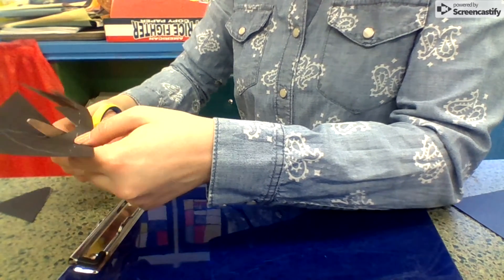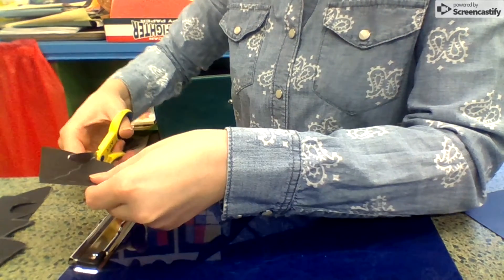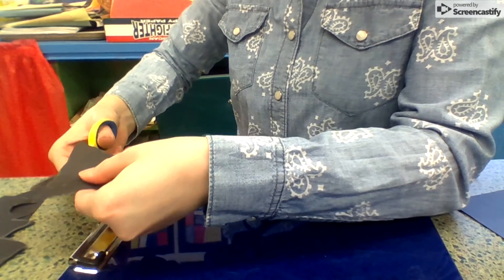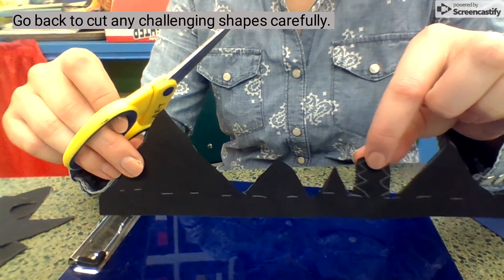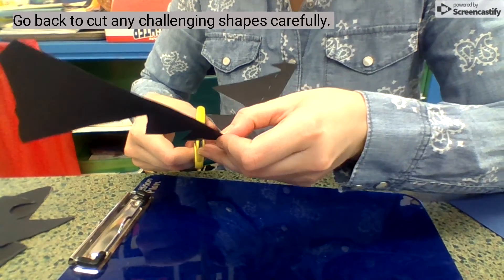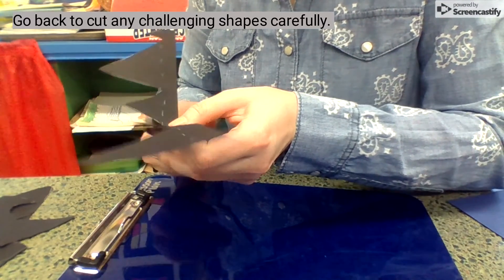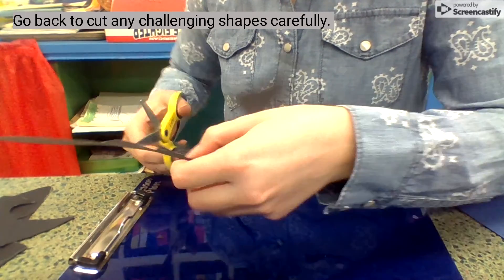And I'm just trying my best to stay on my pencil lines. And now when I have my evergreen tree, I can go back and cut it very, very carefully with my scissors, taking out all those little pieces of triangles one little piece at a time. So that's a challenge.